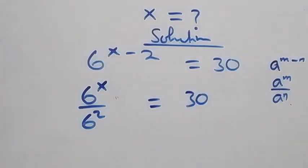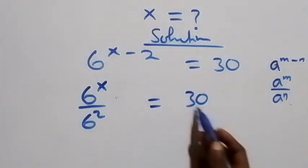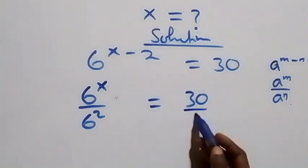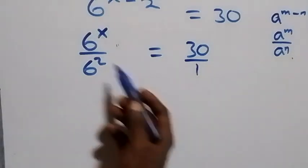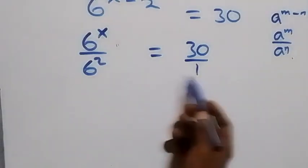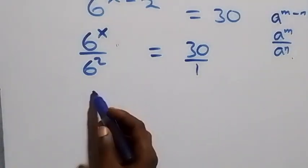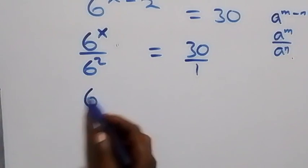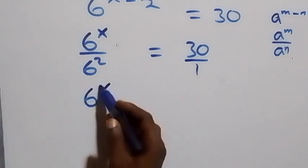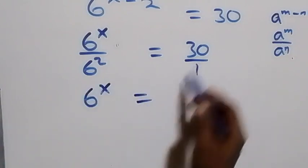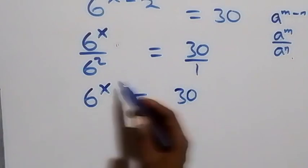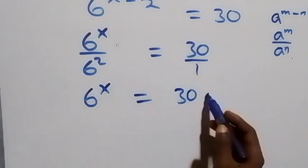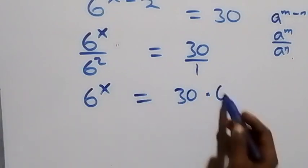This is 30 over 1. And when we cross multiply, 6 raised to power x times 1 gives us 6 raised to power x, then equals 30 times 6 squared.